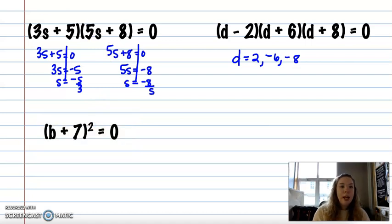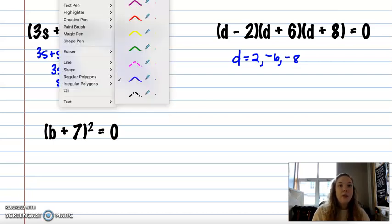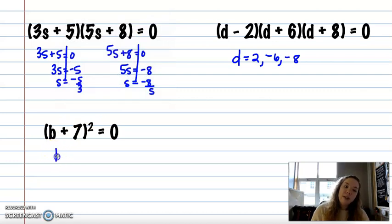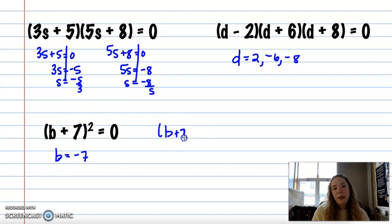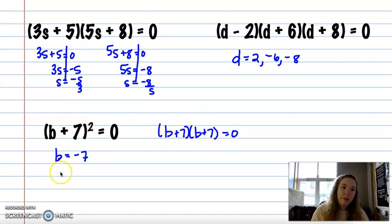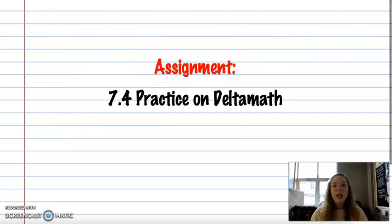Last one for today: (b + 7) squared equals zero. This is an example where you have an exponent of two but only one solution, because both solutions are negative seven. Another way to write this is (b + 7)(b + 7) = 0 — both factors give negative seven. So we just write the solution once. That's the end of our notes for today, and we have an assignment on Delta Math.